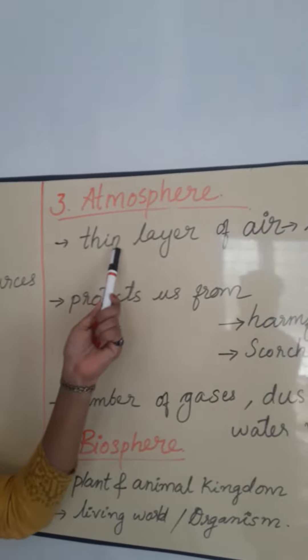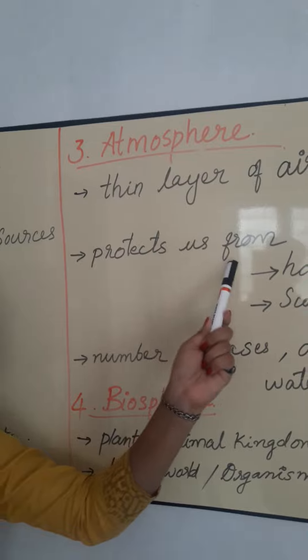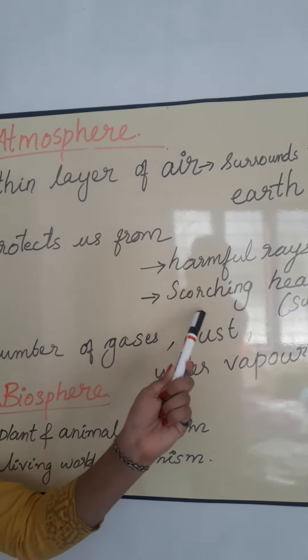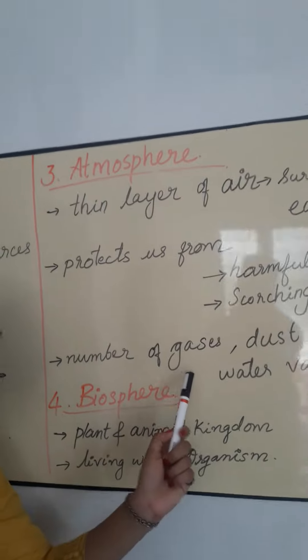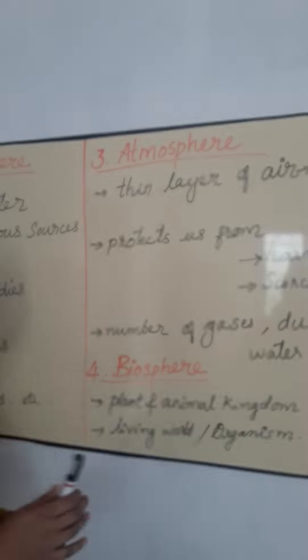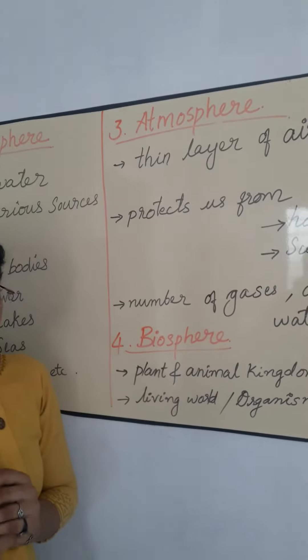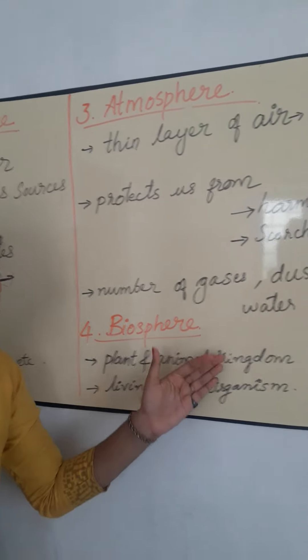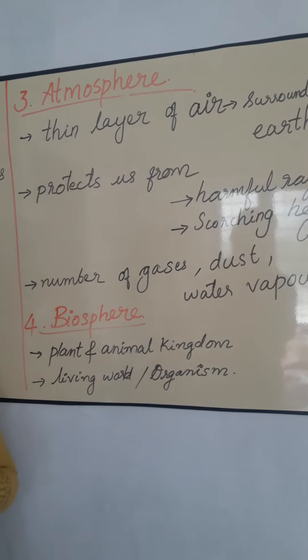Atmosphere is a thin layer of air which surrounds the earth. It protects us from harmful rays and scorching heat of the sun, and it consists of a number of gases, dust and water vapour. And the last — biosphere. Biosphere is referred to as the plant and animal kingdom, or living world, or living organisms. Thank you.